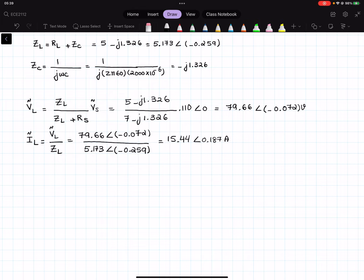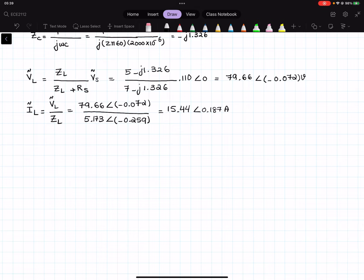Now, I have IL and I have VL, so I can find the S that is my complex power. So we said that S is equal to VL, the RMS value, multiplied by the complex conjugate of the RMS of the current. So VL is equal to 79.63 with the angle of negative 0.072, multiplied by the complex conjugate of the current. So the current is 15.44 with the angle of 0.187. Now, the complex conjugate will be the same amplitude, so it is 15.44, but with the negative angle, because we are writing the complex conjugate. So that would be negative 0.187.